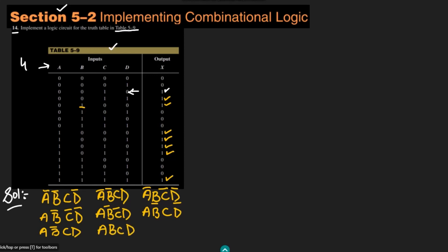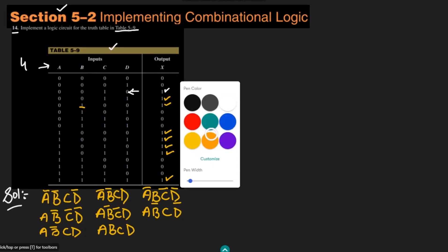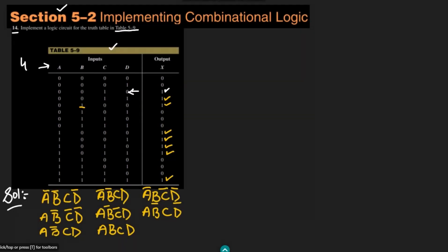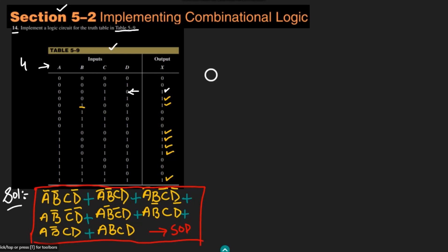These are all the terms for which the output is 1. What I have to do now is add them together in order to make it the sum of products form. Addition of all these product terms gives us the required SOP form — the Boolean expression for this truth table. Now to implement it, I need to see how many inputs I have. There are 4 inputs: A, B, C, D. Let me extend them as well since I will be needing them.